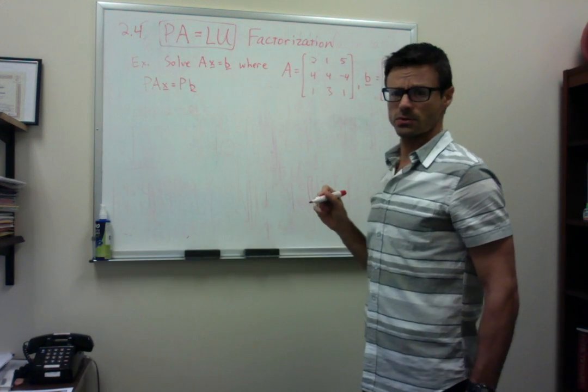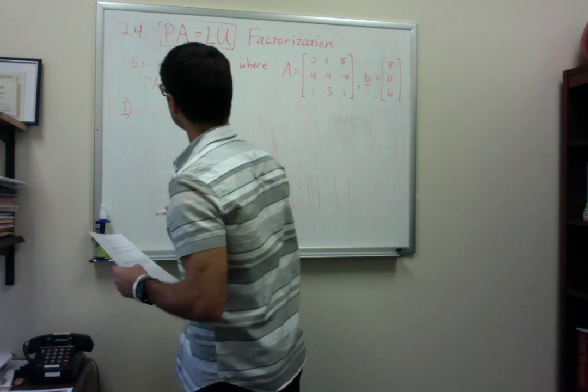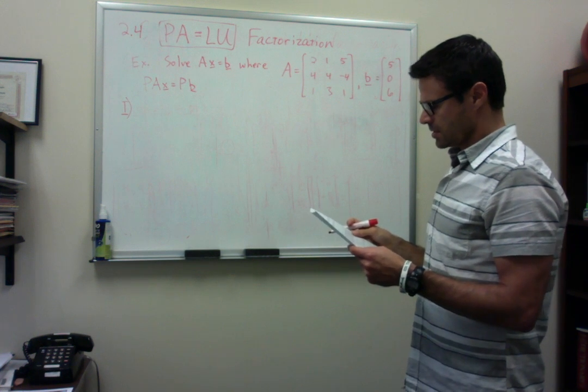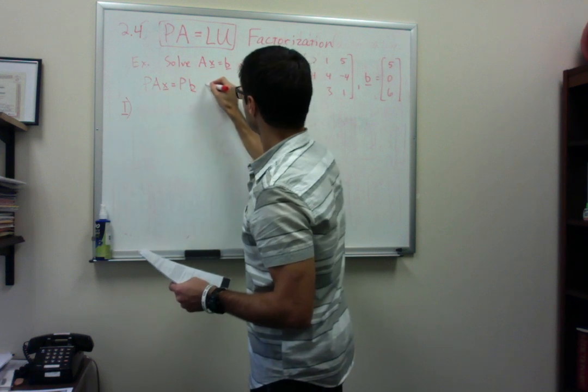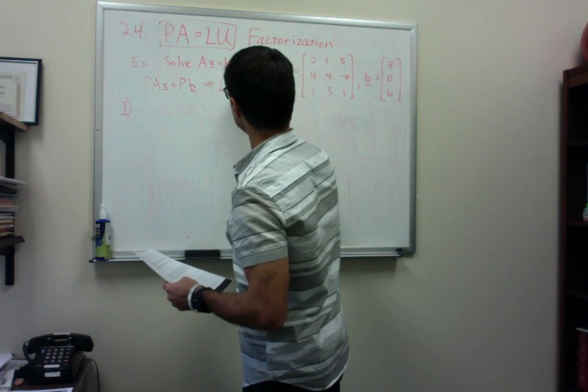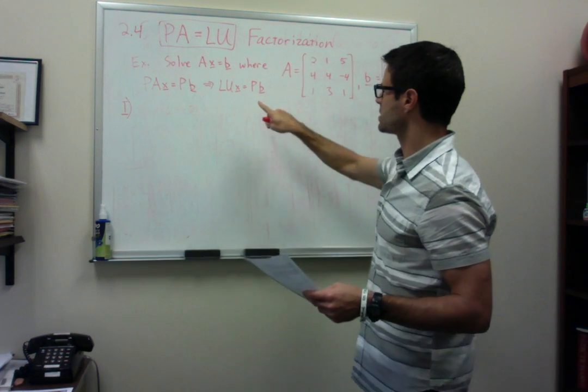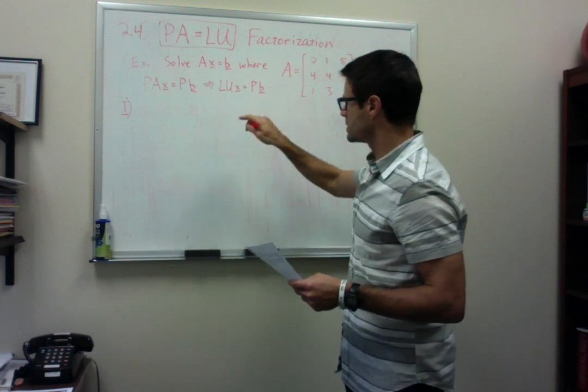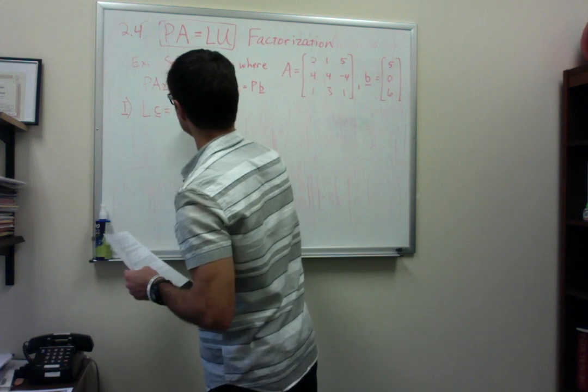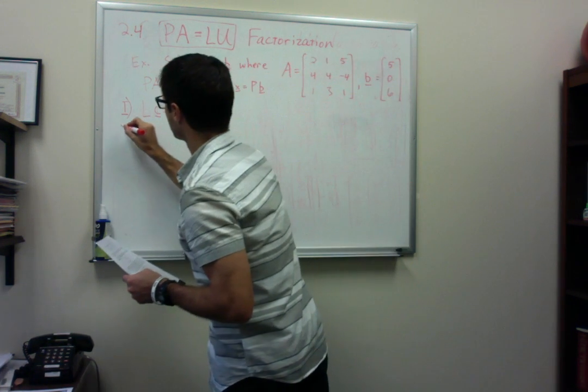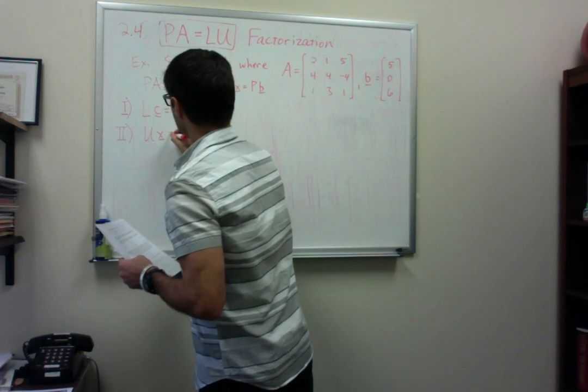Now if we were to write down those two steps that we need to do, the first step would be to solve... if we were to replace the PA with LU, we get LUX equals PB. And if you recall, what we did was we set the UX equal to C. And if we do that, then our first step now is L times C equals P times B, and then the second step is to do UX equals C.